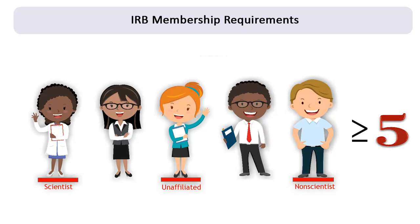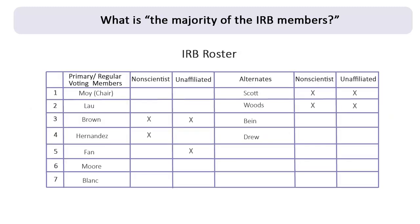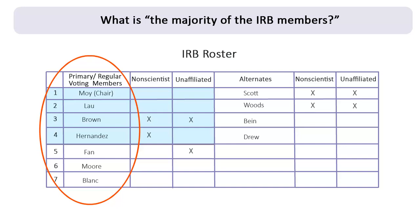The regulations require that a majority of the IRB members be present for a convened meeting. The minimum number of members that must be present to meet this requirement is determined by the number of regular voting members, commonly referred to as primary members, listed on the IRB roster. This means that more than half of the total number of primary members listed on the IRB roster must be present for a convened meeting to proceed.